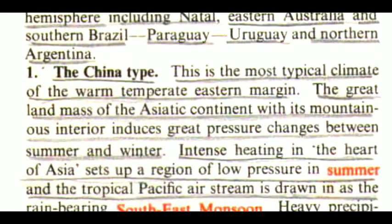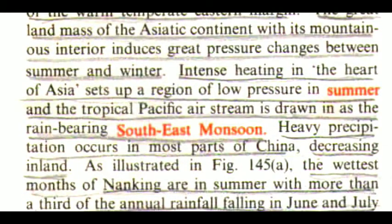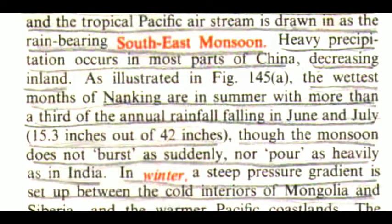The first one is the China type. This is the most typical climate of the warm temperate eastern margin. The great landmass of the Asiatic continent with its mountainous interior induces great pressure changes between summer and winter. Intense heating in the heart of Asia sets up a region of low pressure in summer and the tropical Pacific air stream is drawn in as the rain-bearing southeast monsoon. Heavy precipitation occurs in most parts of China, decreasing inland. The wettest months of Nanking are in summer, with more than a third of the annual rainfall falling in June and July — 15.3 inches out of 42 inches.